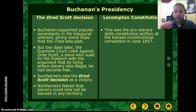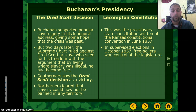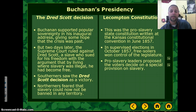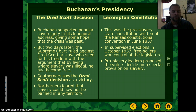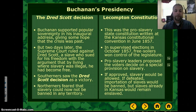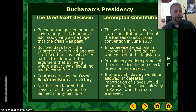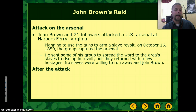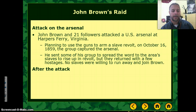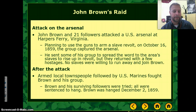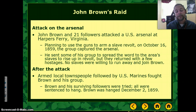The Lecompton Constitution was a pro-slavery constitution written by the Kansas Constitutional Convention. Free Soilers won control of the legislature in 1857, and pro-slavery leaders proposed that voters decide on a special provision on slavery — if approved, slavery would be allowed; if defeated, importation of slaves would be banned, but slaves already in Kansas would remain enslaved. Then in late 1859, John Brown and 21 of his followers attacked the U.S. arsenal at Harper's Ferry, wanting to start a slave revolt, but they were captured, the revolt didn't happen, and Brown was hanged on December 2, 1859 — showing how far the conflict had come.